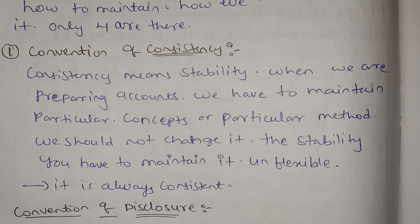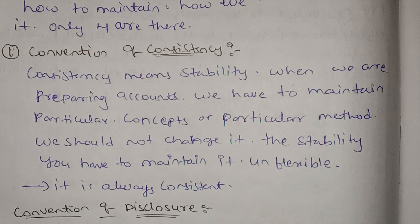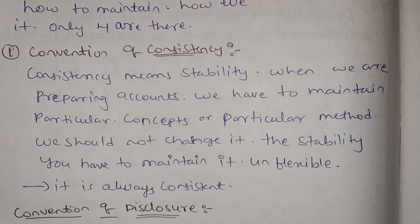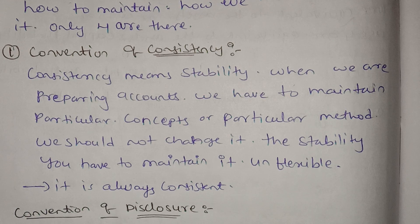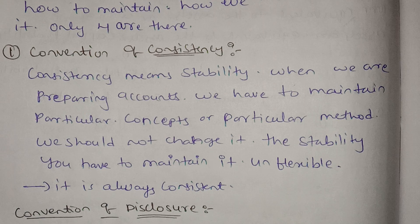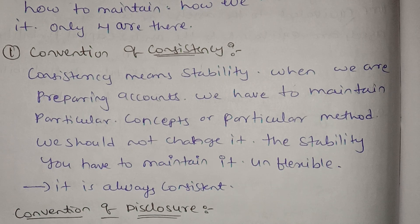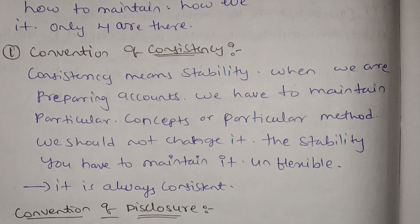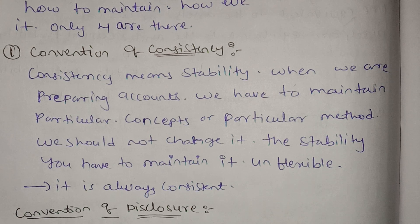Convention of Consistency means that we maintain accounts using the same concepts, so that you don't need more about accountability. That's why the concept is needed. You need to do all the same concepts. If you use some other concepts, you need to analyze them. You need to maintain that approach and change the method accordingly.